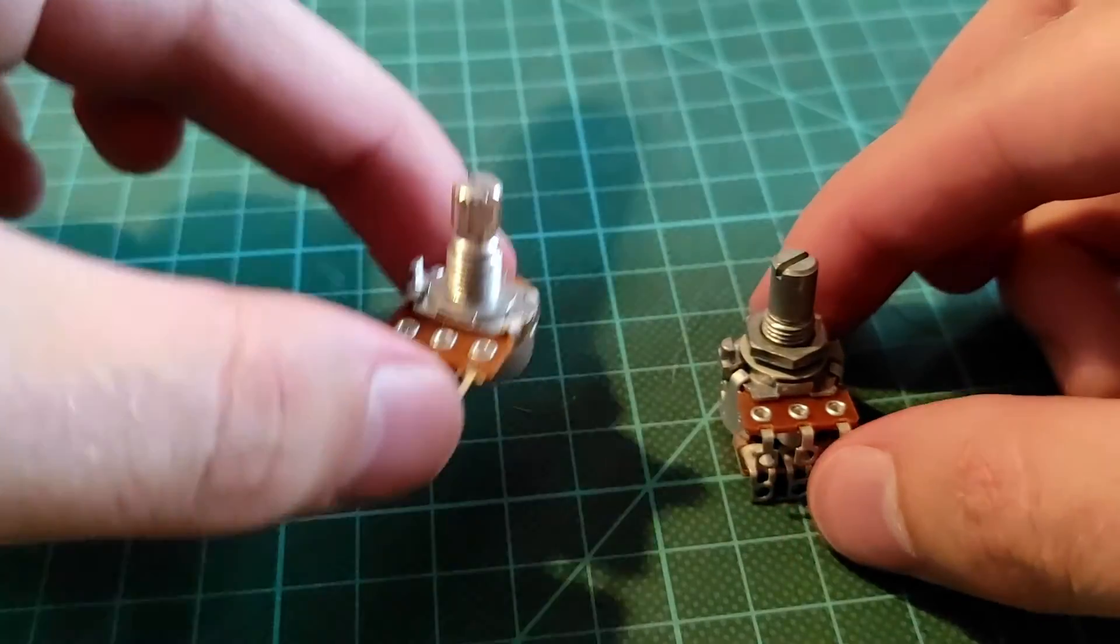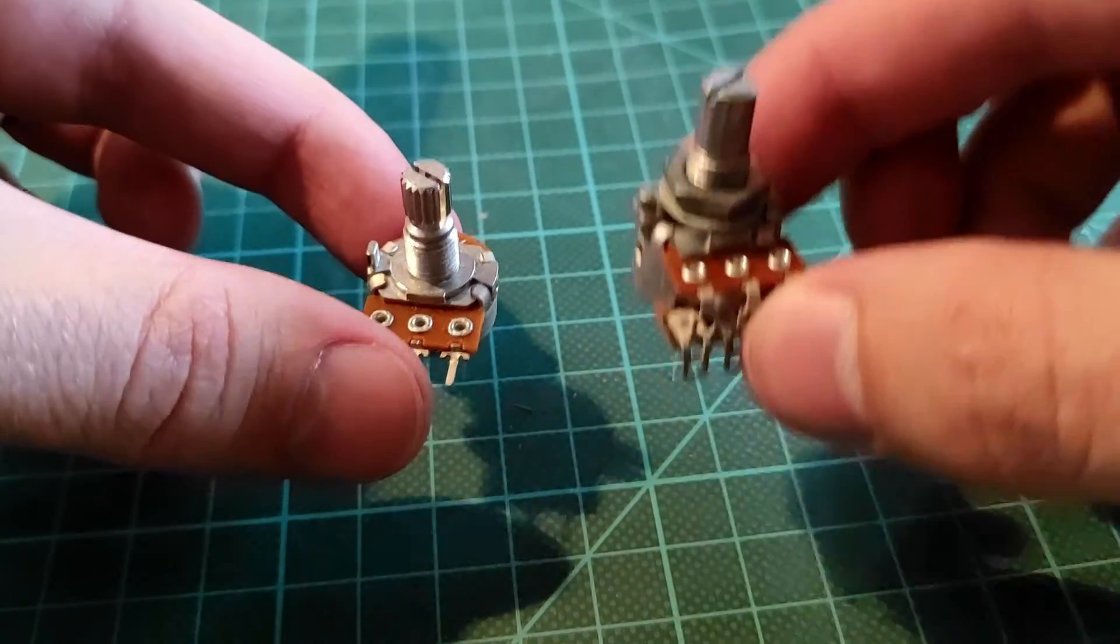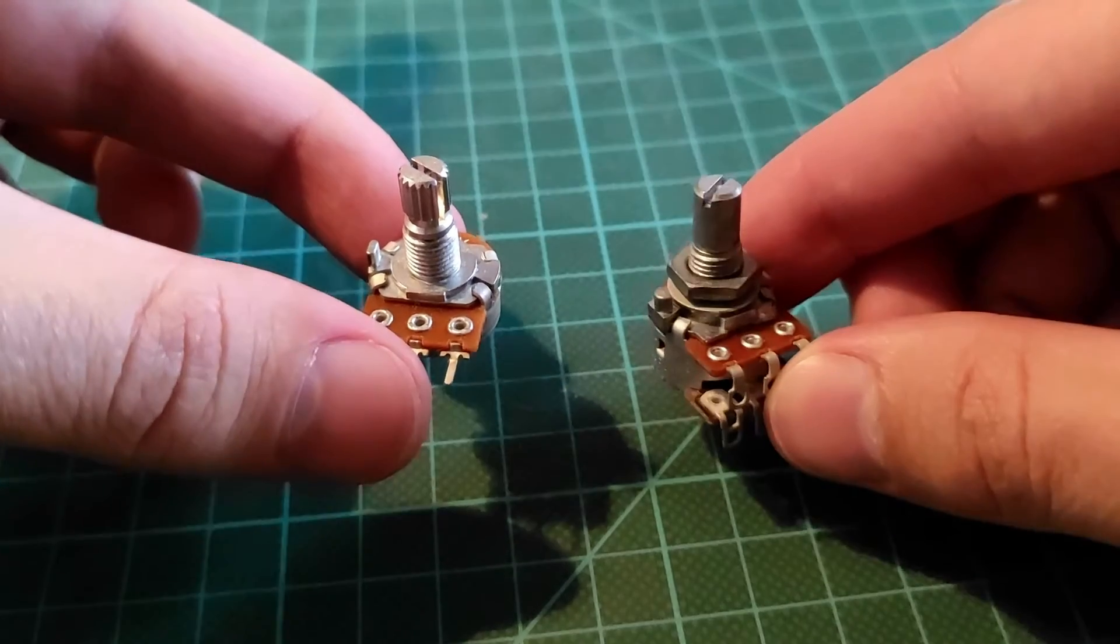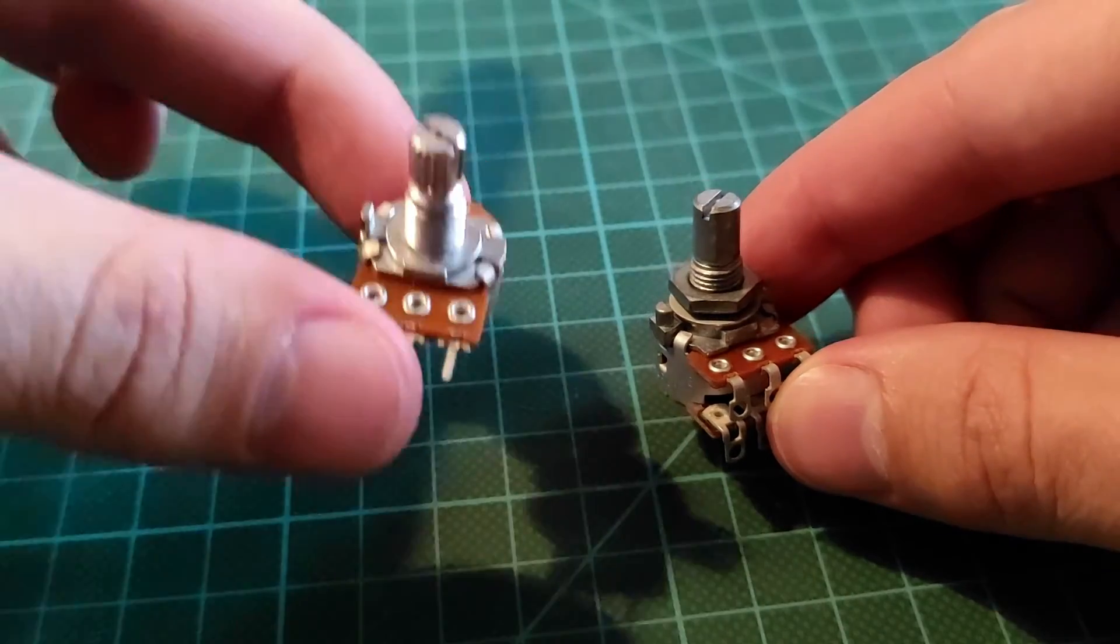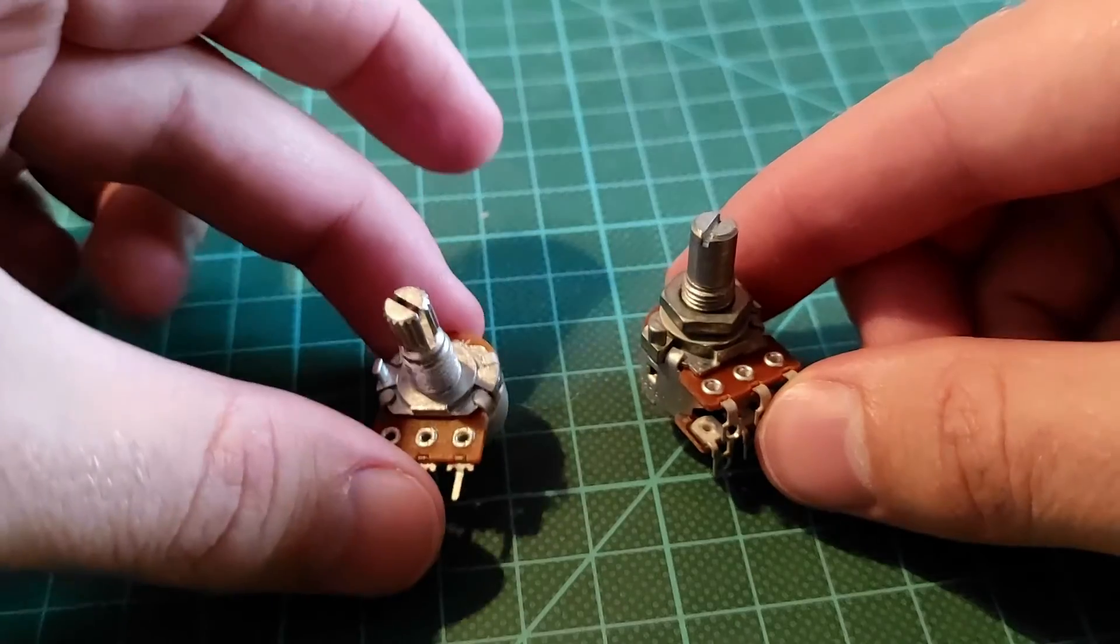So that's how to differentiate between an audio, an A logarithmic potentiometer, and a B linear potentiometer with some measuring instruments.